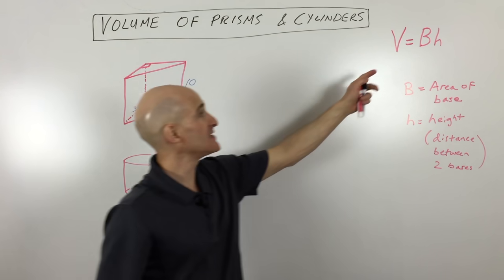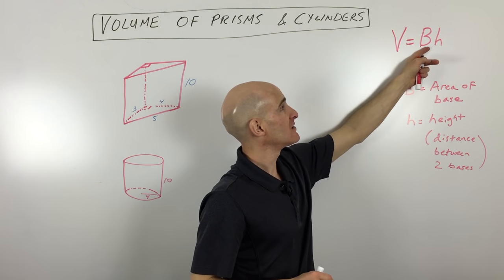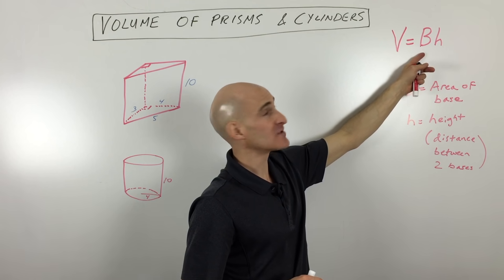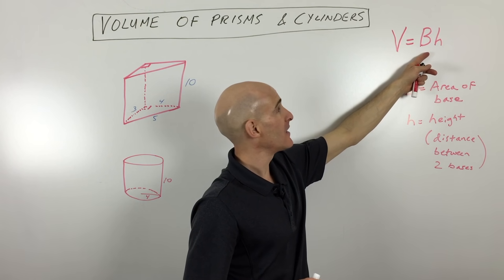The formula is really easy: it's the area of the base times the height. The capital B means the area of the base - not the length of the base, but the actual two-dimensional area times the height.